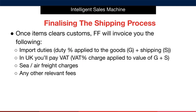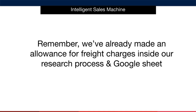Once the item clears customs, the freight forwarder will invoice you the following. Number one is import duties — the percentage of duty applied to the goods plus the cost of shipping. In the UK, you'll pay VAT. VAT is a percentage charged and it's applied to both the cost of the goods and the shipping. Number two, you will pay the sea or air freight charges, and number three, any other relevant fees. Remember, I've already made an allowance for freight charges inside our research process and tool, so don't get too concerned about these fees and that they'll take away from your profit.